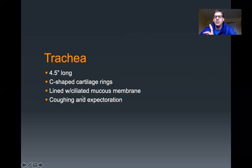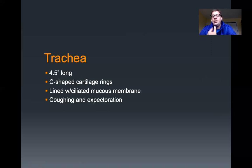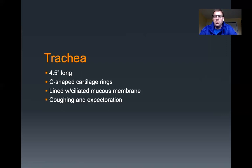The cilia in the trachea beat back and forth constantly. However, if you're a smoker, those cilia get damaged and stop functioning. What happens is at night you lay down, and those cilia are supposed to beat back and forth passing mucus up out of the trachea to the esophagus to be swallowed. Instead, all that mucus builds up in your trachea and bronchi, and when you wake up in the morning as a smoker, the first thing you have to do is cough and cough and spit and get all of that mucus that's been sitting there all night long out.